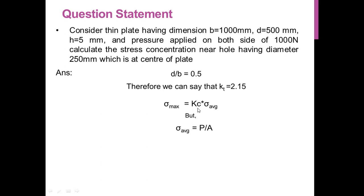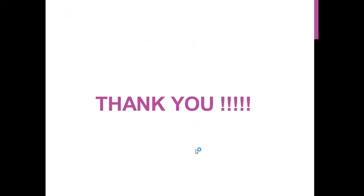The maximum stress or stress concentrated is calculated using the formula: sigma_max = Kc × sigma_average, where Kc is the stress concentration factor and sigma_average = P / A. The area for that plate is (B − D) × H because we subtract the area of the hole. Putting in all values, the maximum stress acting on the plate is 1.72 Pascal.